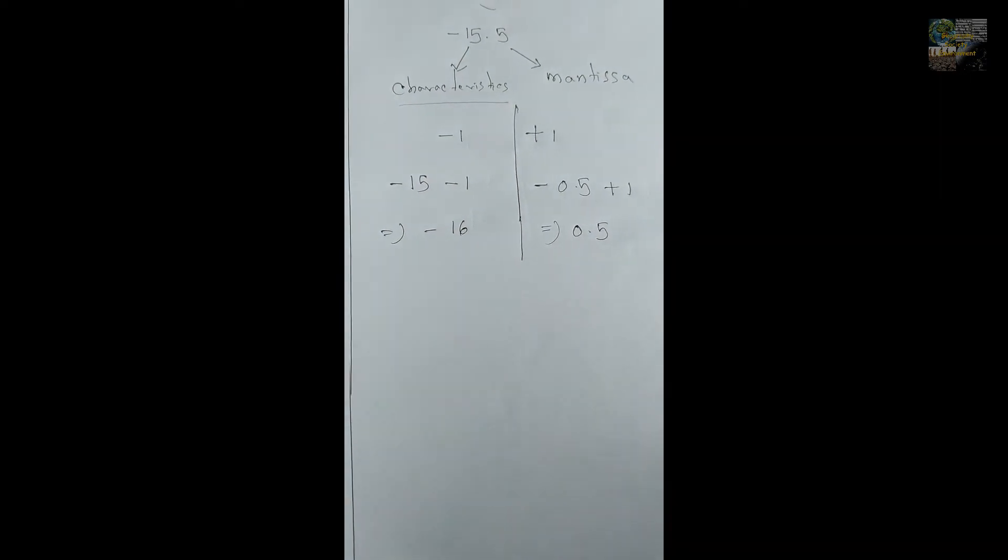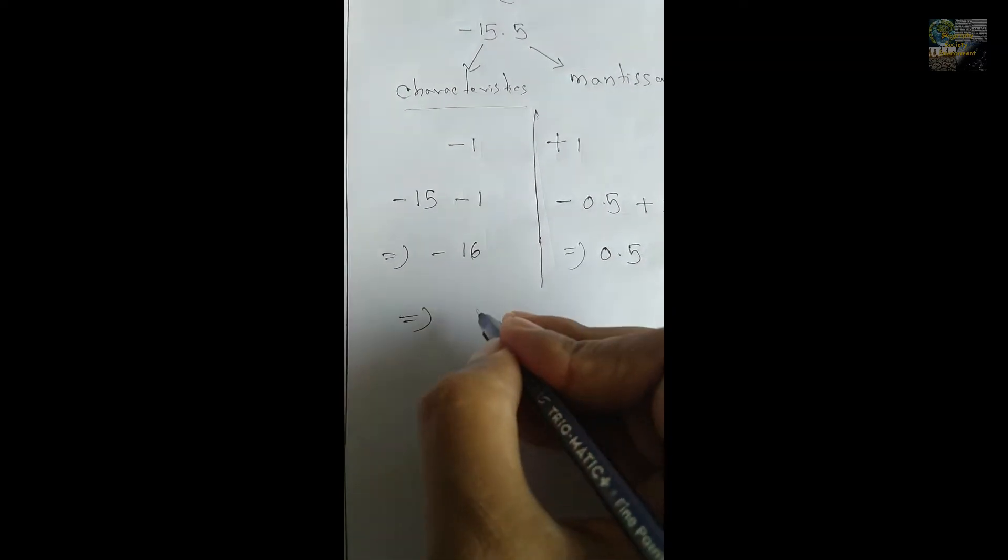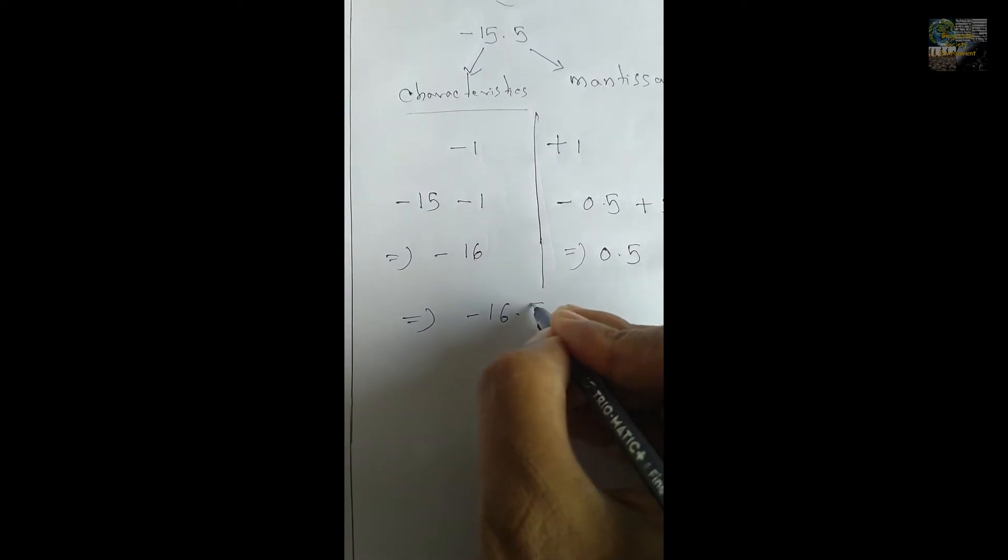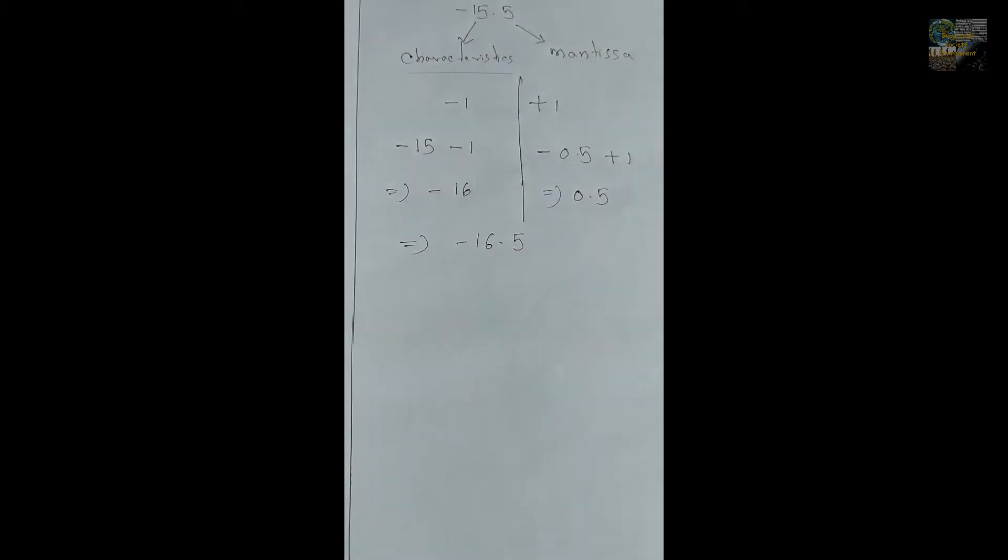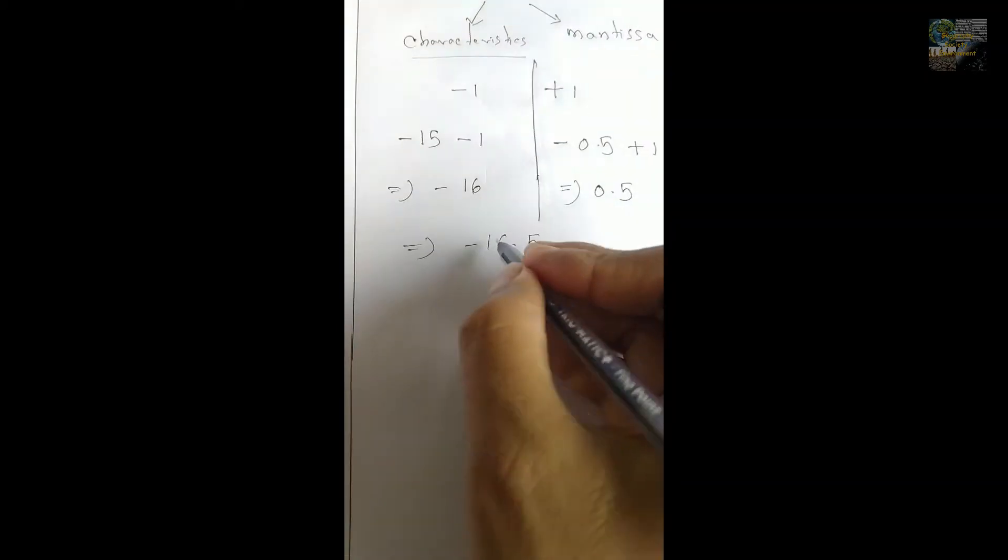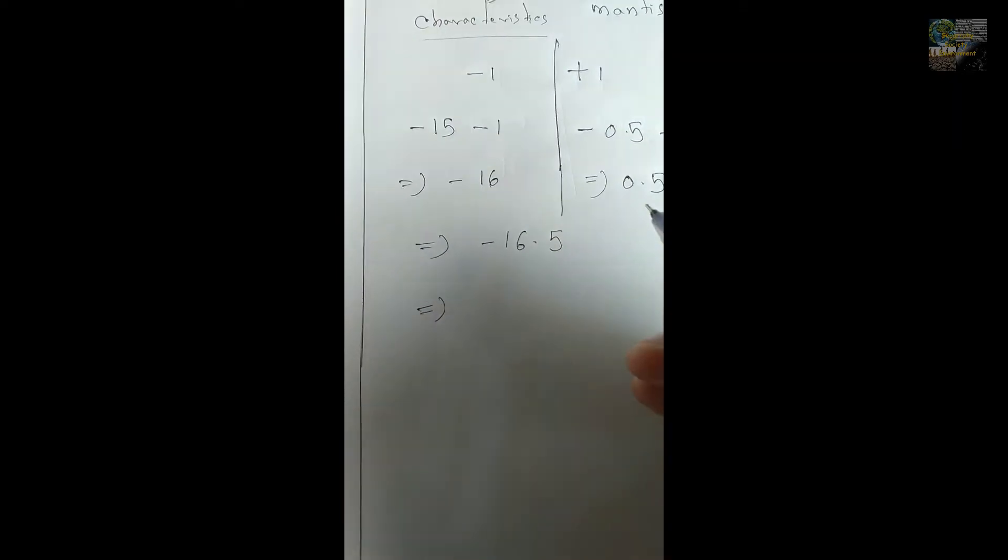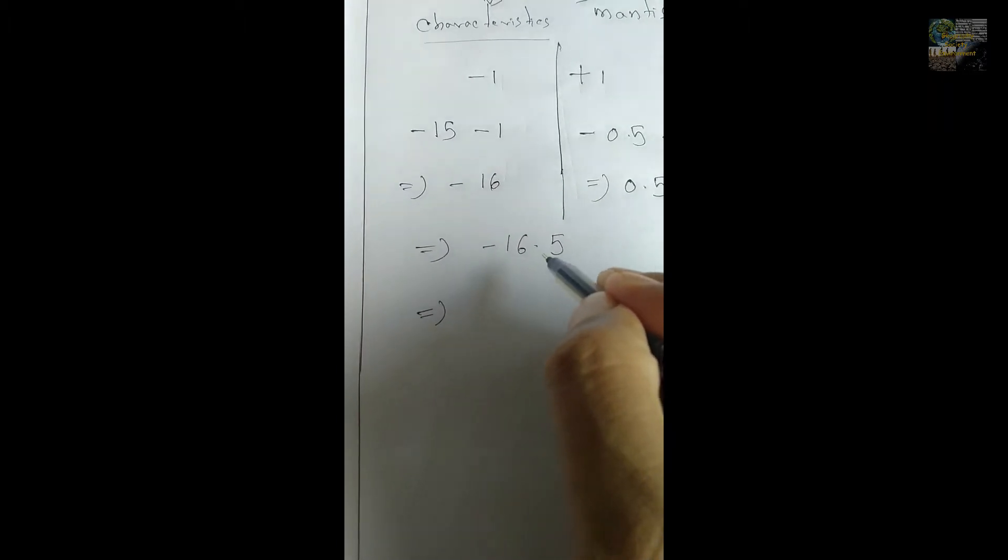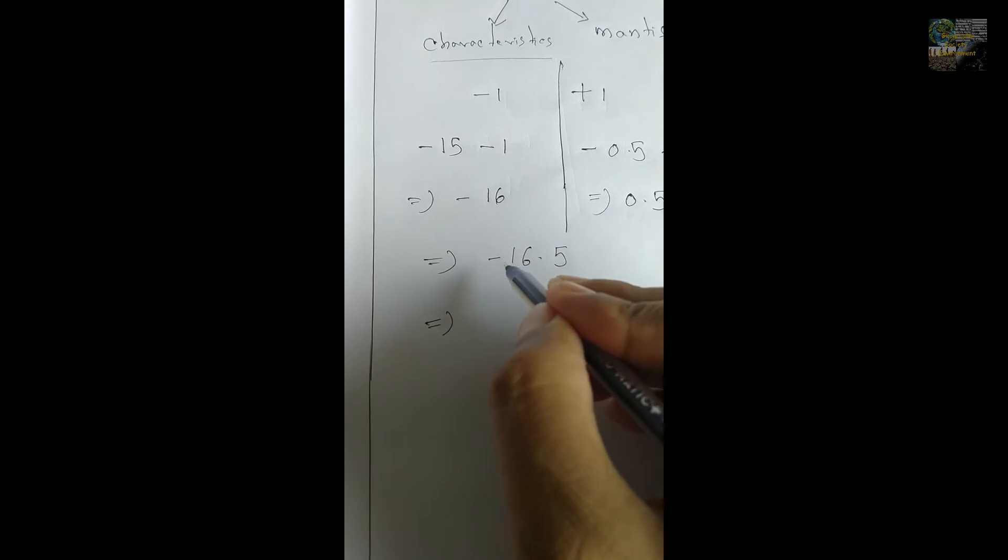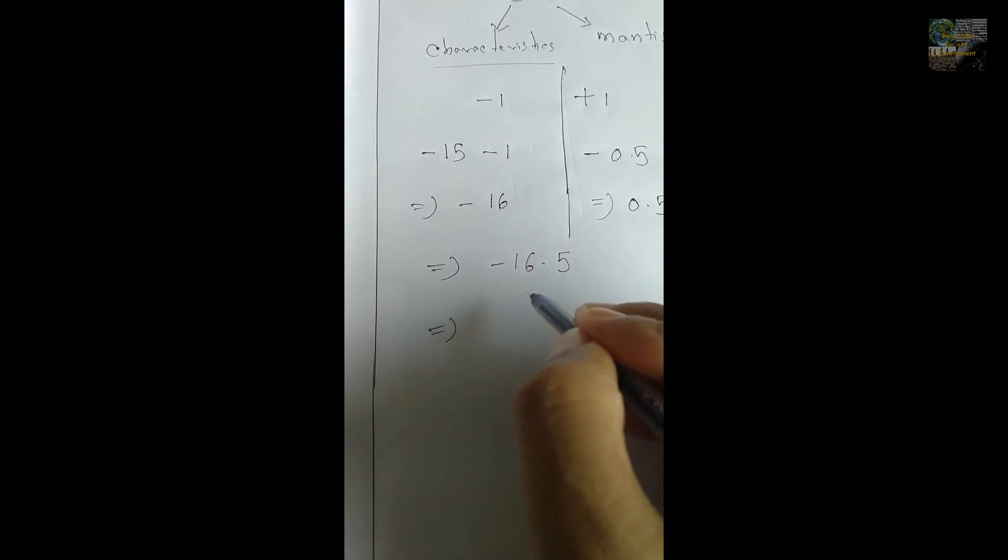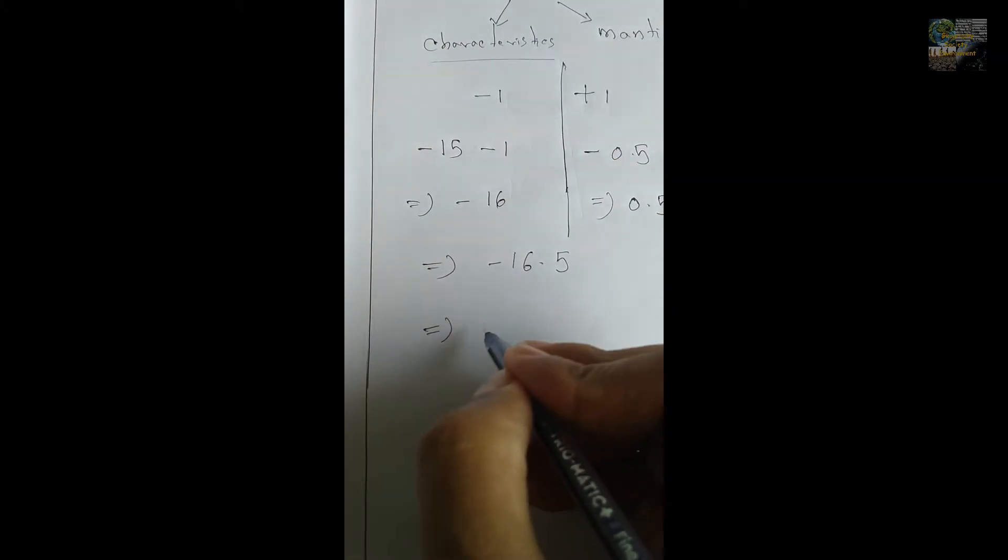You can see that this is the value. Ultimately, the value I can write is minus 16.5. From this point, I need to identify the mantissa from the antilog table, and the characteristics part should be written in the scientific notation form.